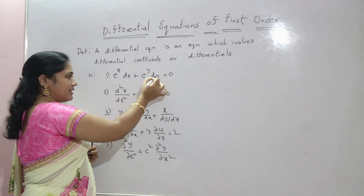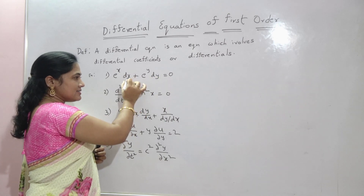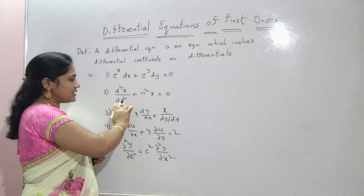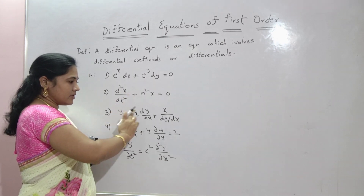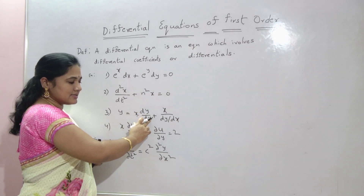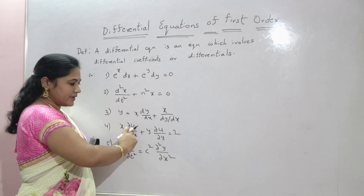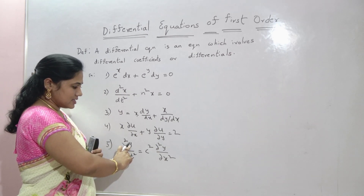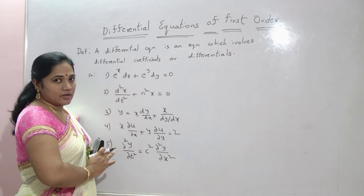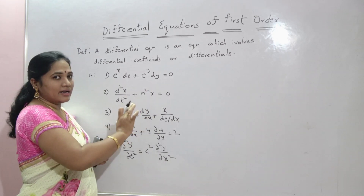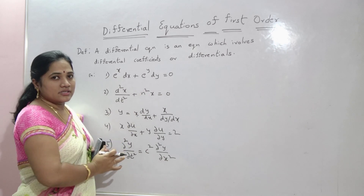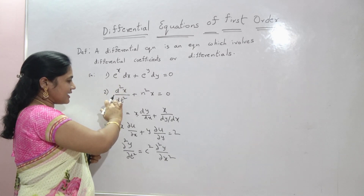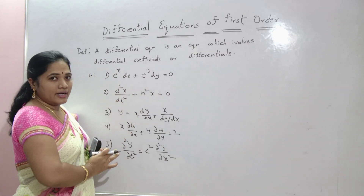In the first equation, y is the dependent variable and x is the independent variable. In the second, x is dependent on t, so t is independent. In the third, y is dependent and x is independent. If any equation has only one independent variable, it is called an ordinary differential equation. The first, second, and third examples are ordinary differential equations.